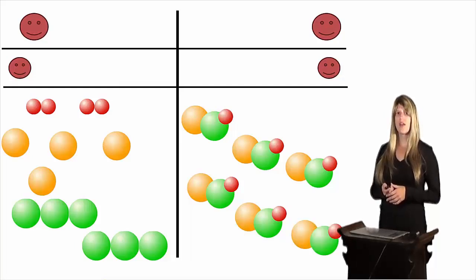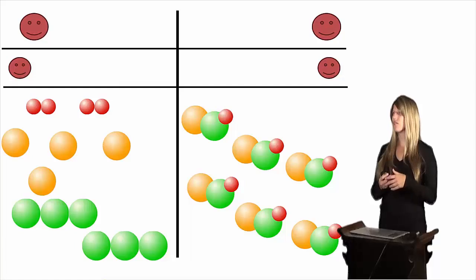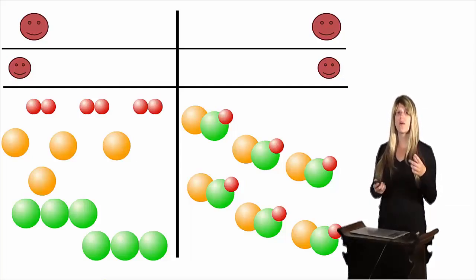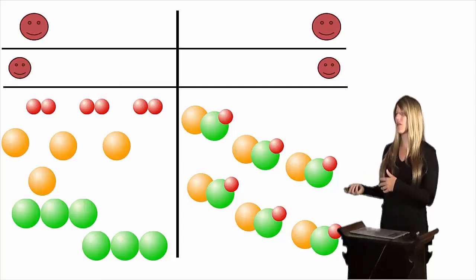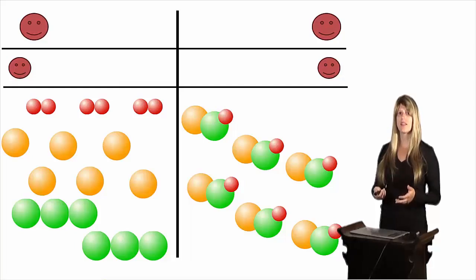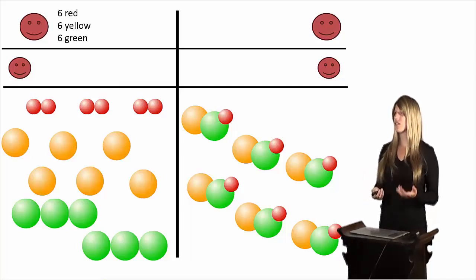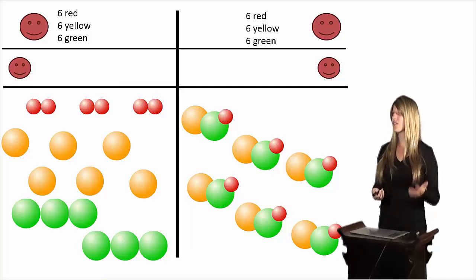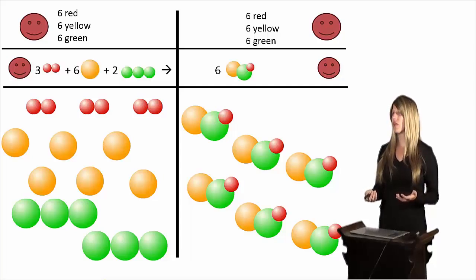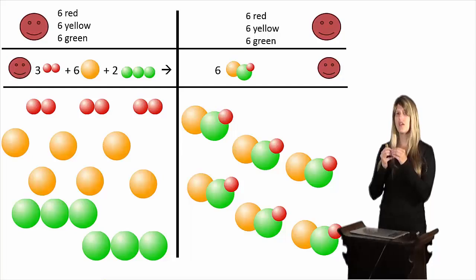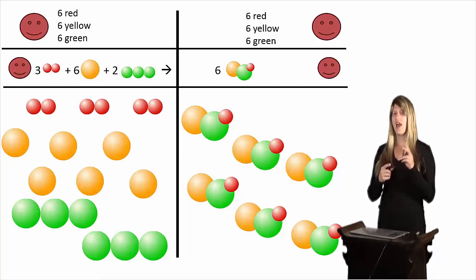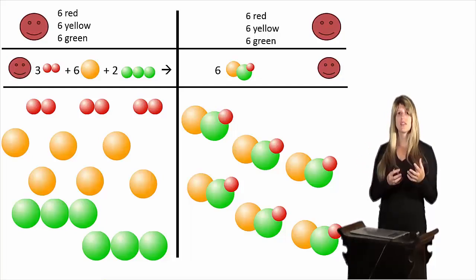If we add two more of the products on the right, we now have six green on the left and six green on the right. Now let's take a look at all our different colors: we have four red on the left but six red on the right, so we add one more pair. We have four yellow on the left but six yellow on the right, so we need two more yellow to balance it out. Finally, we have six green on the left and six green on the right — so we're all balanced: six yellow, six green, and six red on each side. How would we write this as a chemical equation? We have three of the red pairs, six of the yellow circles that come on their own, and two of the triplet green circles — and this gives us six of that product that has one of each color.